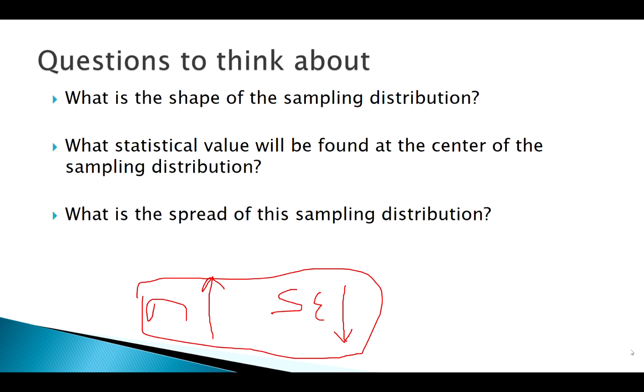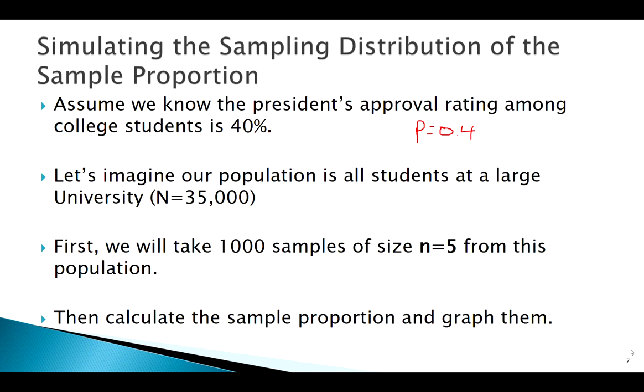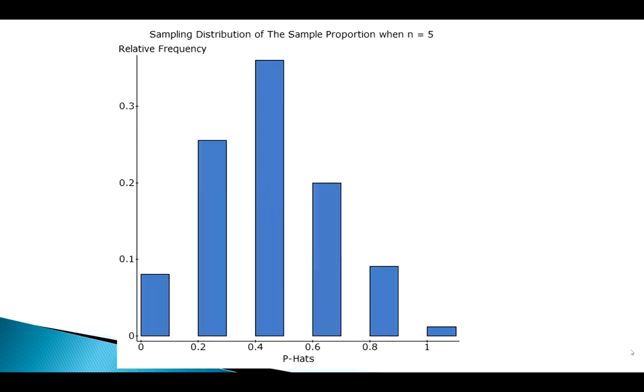So 1,000 samples of size 5 from this population calculate p-hat and graph. Here's what that looked like. So to answer our questions, shape-wise, maybe a little bit right-skewed.